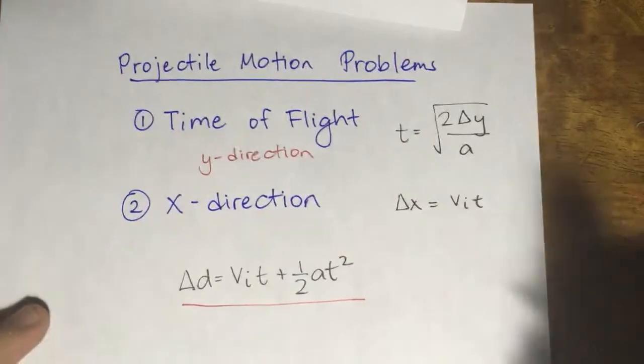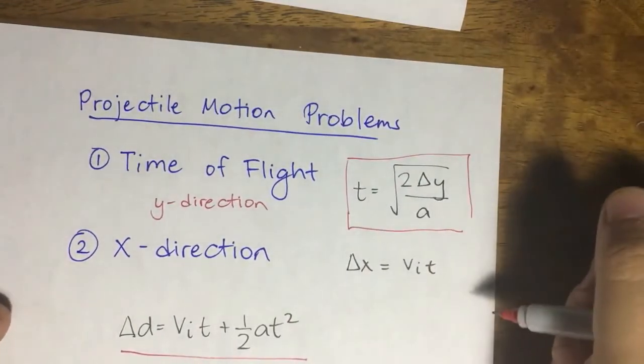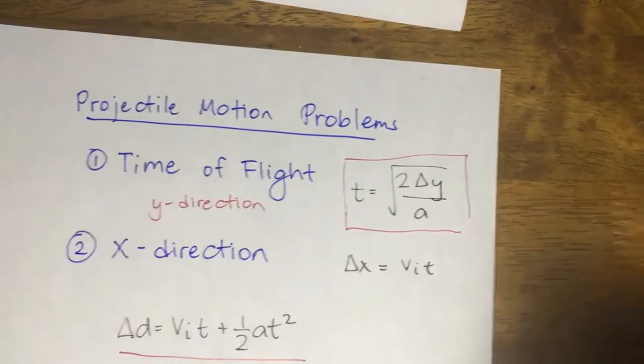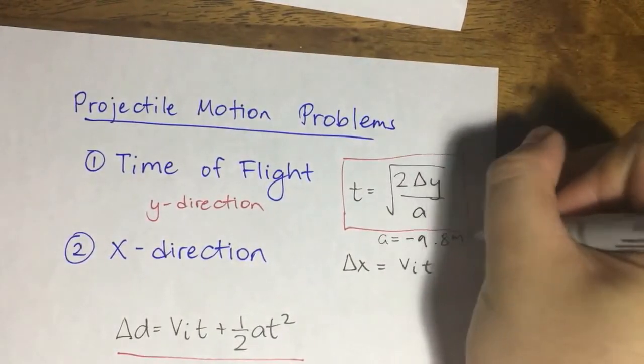Displacement is equal to VIT plus one half AT squared. However, rearranging it would give you this form: T is equal to square root of 2 delta y over A, where A is equal to negative 9.8 meters per second squared.